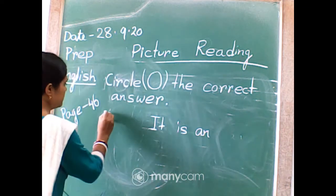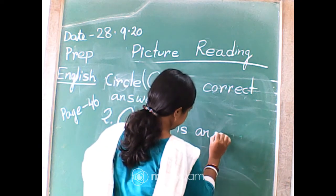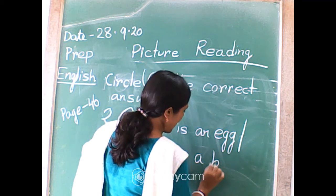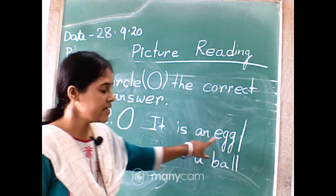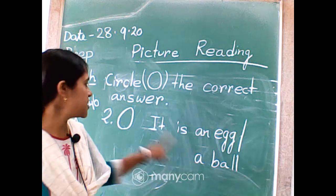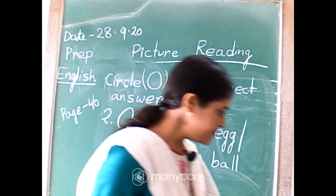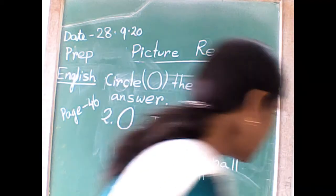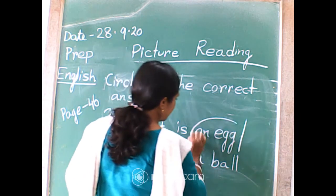Number two. It is an egg or a ball. If it is an egg, write 'an' before it. If it is a ball, write 'a' before it. Write the answer on your chat box. It is an egg.